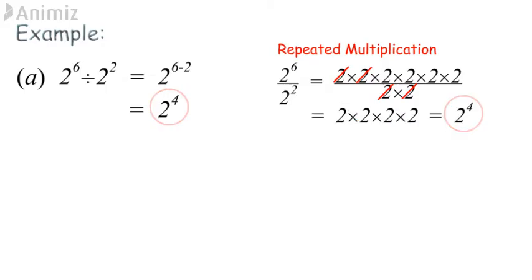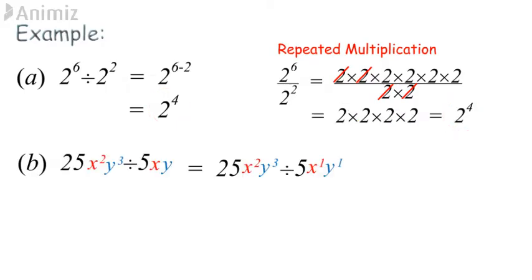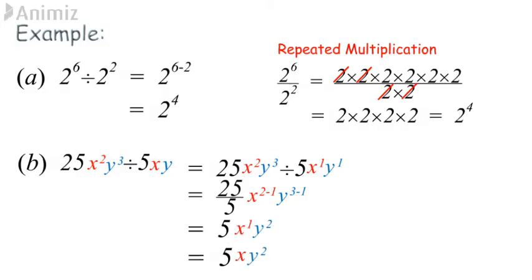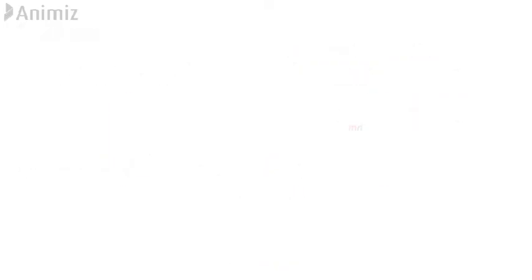Example B: group the numbers and algebraic terms with the same base first. Operate the coefficient 25/5, and apply the second law of indices on x and y. At last we end up with 5xy².